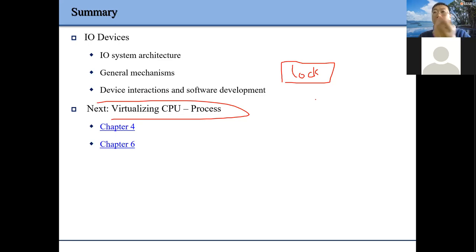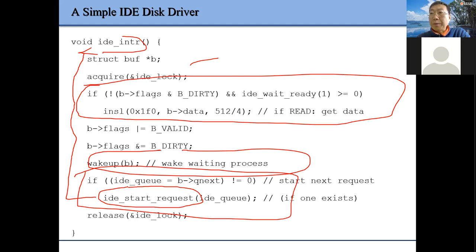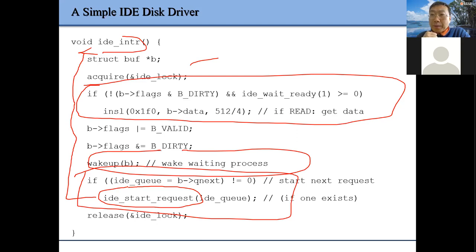In this case, we have a data structure — the IO queue for the IDE device. We want to create mutual exclusive access, which means we only allow one process to enter this critical section to access our shared global variable.